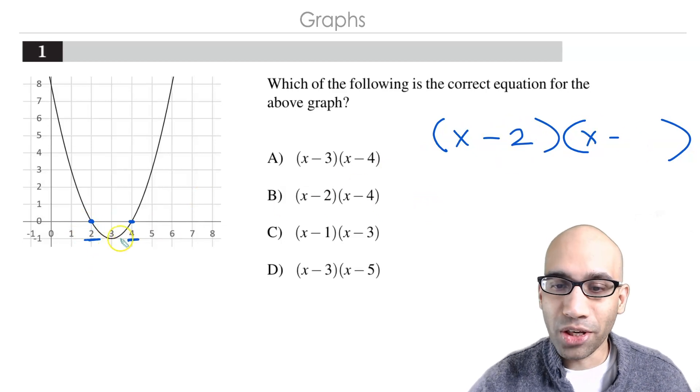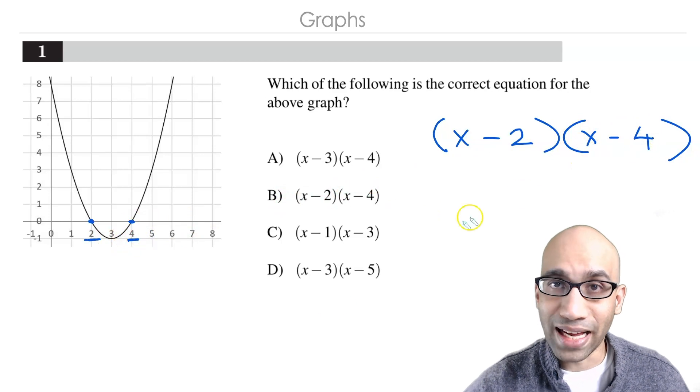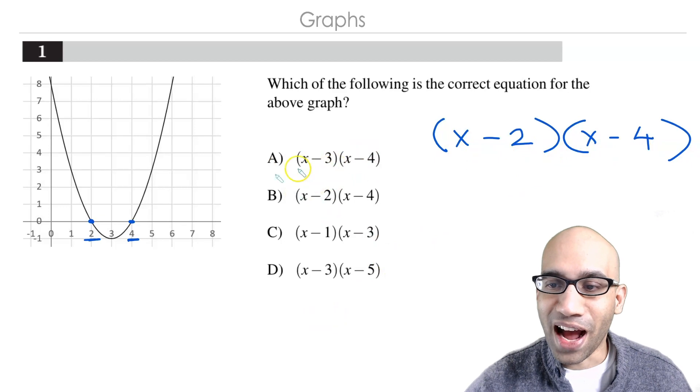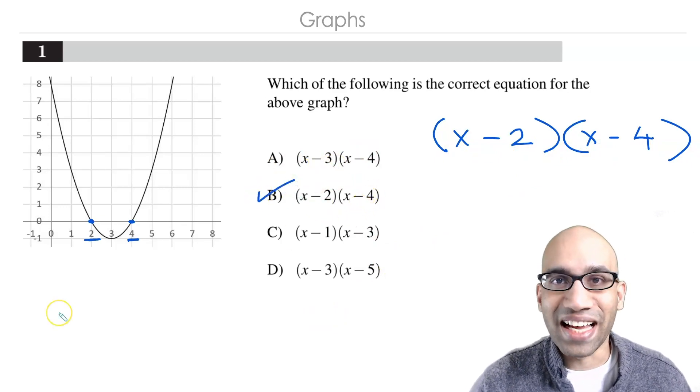And then over here, you're going to take the 4 and just write it down over here. You've got x minus 4. And now, that's it. You're going to identify B as your correct answer as it exactly ties out with what we've got.